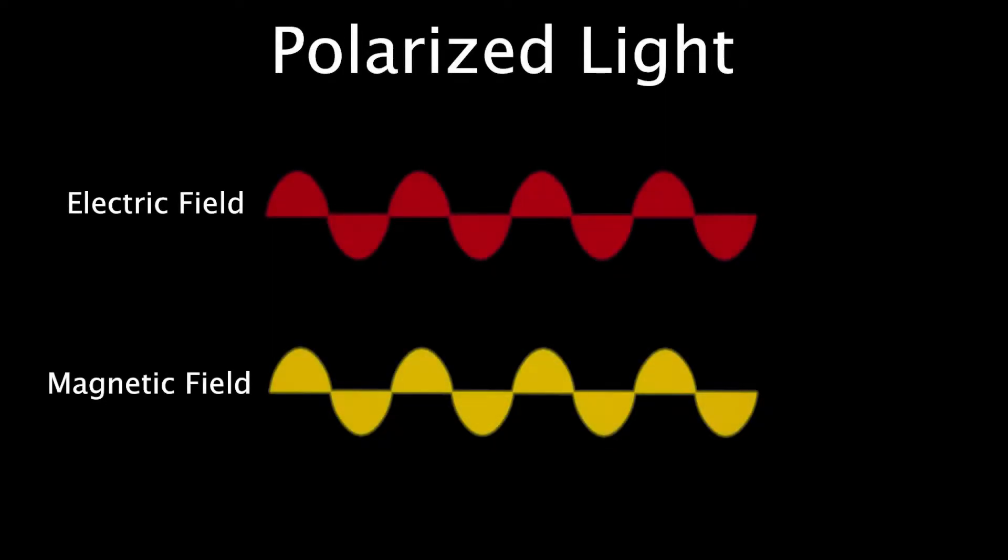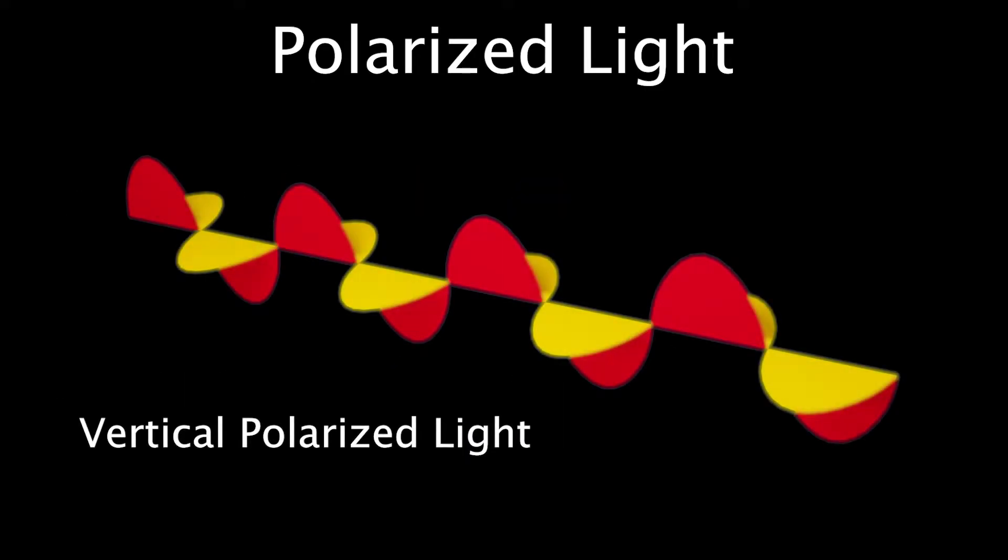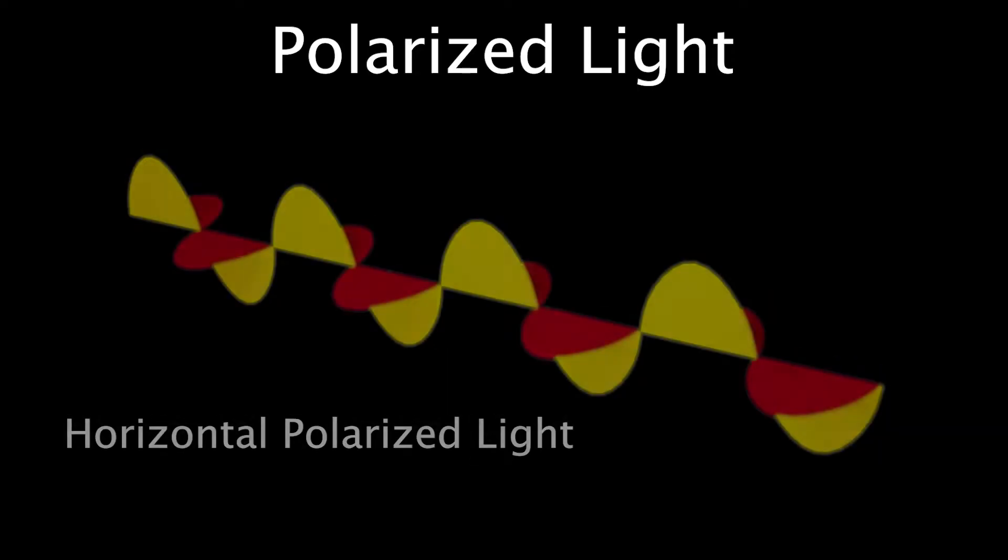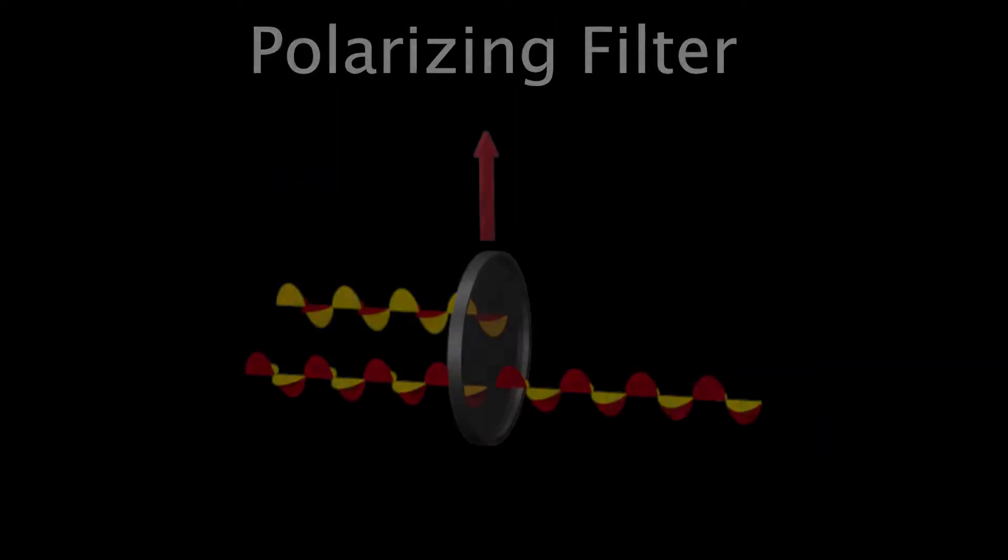So as we know, light is made of an electric field and a magnetic field. Vertically polarized light would have a vertical electric field, and horizontally polarized light has a horizontal electric field. So a polarizing filter then only allows light to come through in one polarization, either vertical or horizontal.